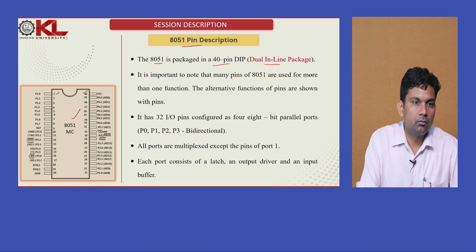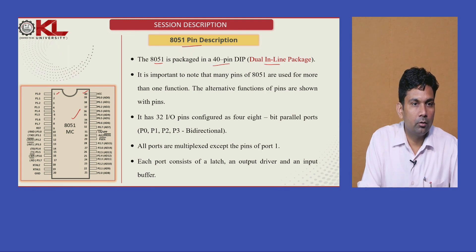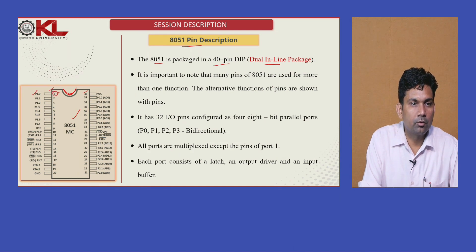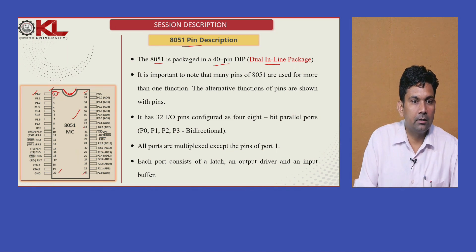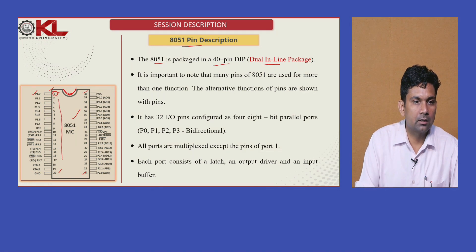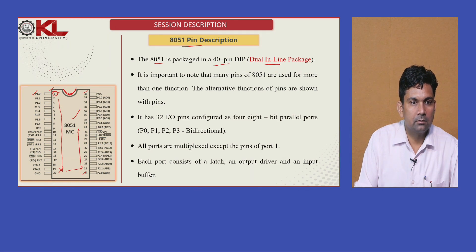If we take the IC and place it in front of us, we see a notch symbol on the top. From that notch, start counting from the left side — pin 1 starts here, which is Port 1. Going down reaches pin 20, then moving to the right side gives pin 21, and going up reaches pin 40. This is the sequence of the pins.